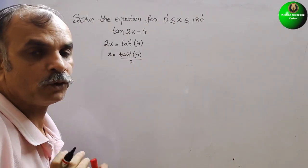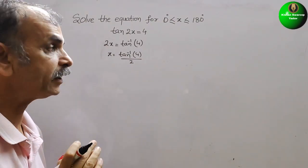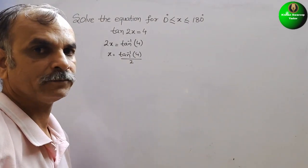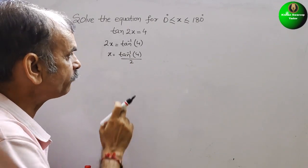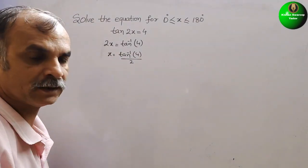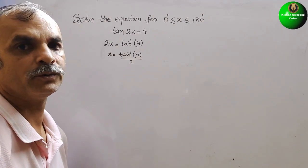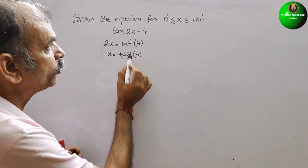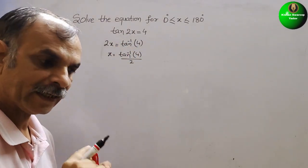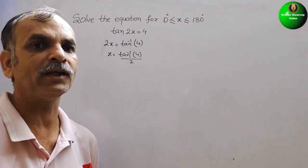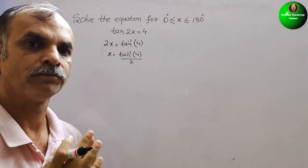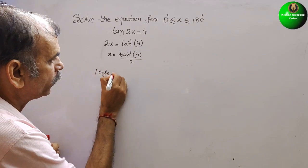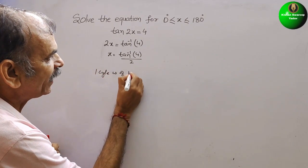So what we have to do? We have to find out the value of tan⁻¹(4) first on our calculator, then we will get the value of x. The second thing — we know that tan has one complete cycle of 180°.